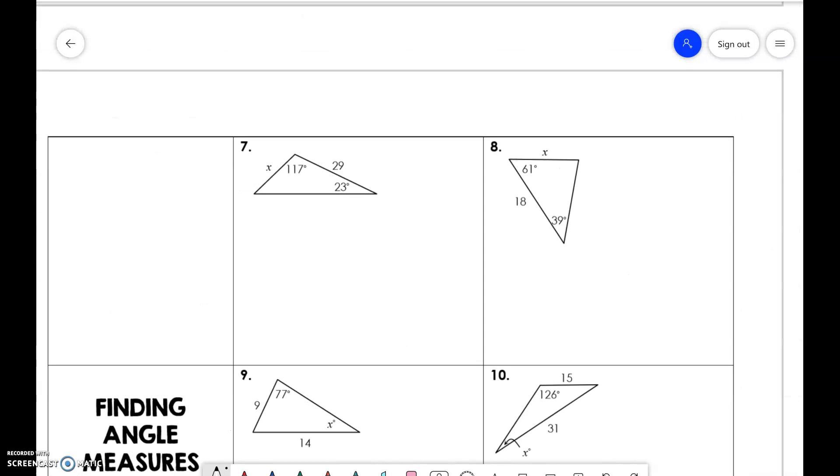We need to know that other missing angle, so 180 minus 17 minus 23 is 40. So sine of 40 over 29 is equal to sine of 23 over x.